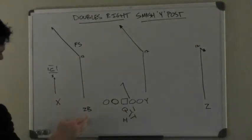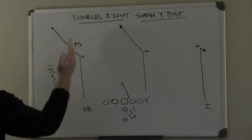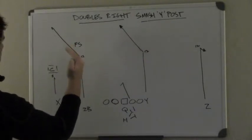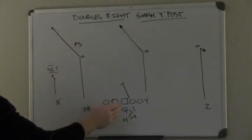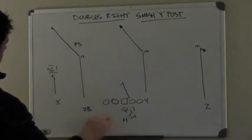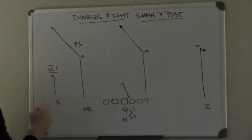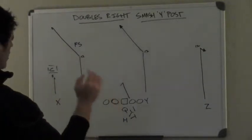The slot receiver is going to run right at him, and at about 12 yards, he's going to make a sharp break for the corner. The quarterback is going to take 5 steps and hitch. If the corner stays up on this hitch by the X receiver, the quarterback should deliver a nice throw.